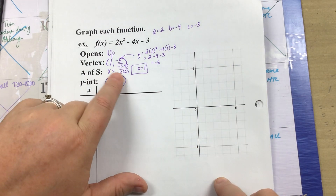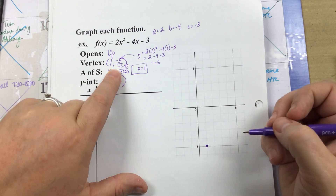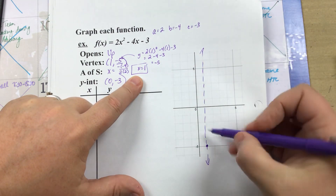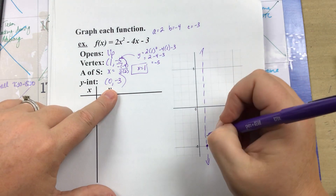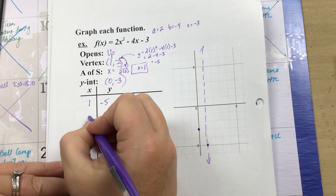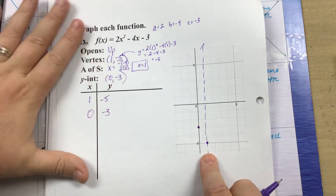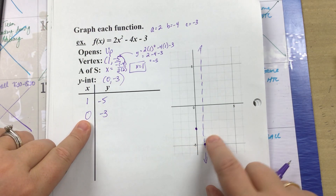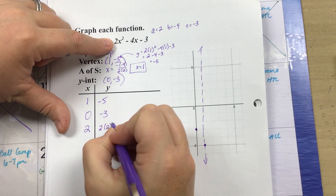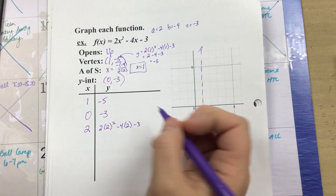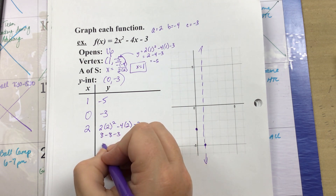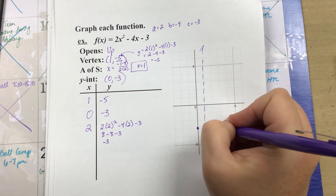Plotting the vertex at (1, -5) on the graph, and the axis of symmetry is at x equals 1 — the graph is symmetric about that axis. The y-intercept is at (0, -3). I have those two points. Now I need to go to the right as well, so let's plug in x equals 2: 2 times 2 squared minus 4 times 2 minus 3 gives 8 minus 8 minus 3, which is negative 3. So we have the point (2, -3).